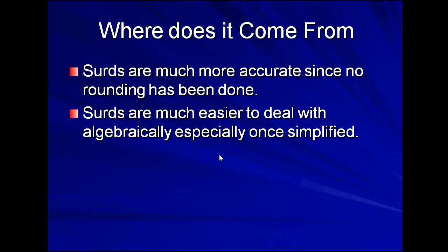OK, quick recap then. Surds are more accurate because we haven't done any rounding. It gives us an exact value for numbers. Surds are much easier to deal with algebraically once they're simplified. So we can cancel them out. We can multiply them together to make whole numbers and things. So much easier to work with.